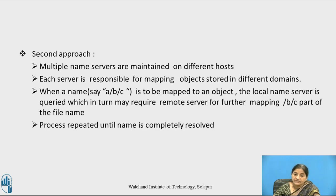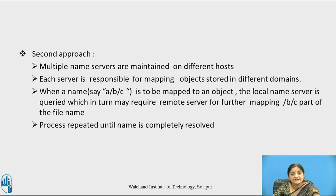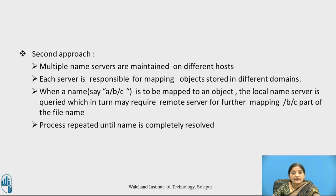The second approach uses multiple name servers maintained on different hosts (computers), which avoids the disadvantage of a single point of failure. Each server is responsible for mapping objects stored in different domains. When a name such as A/B/C is to be mapped to an object, the local name server is queried first, which in turn may require a remote server for further mapping the remaining /B/C part of the file name.